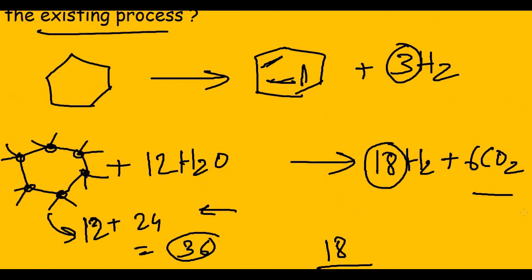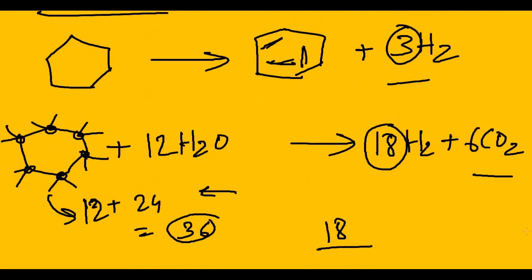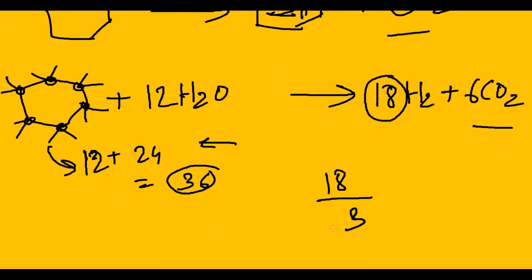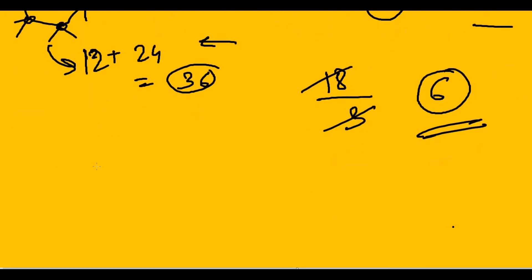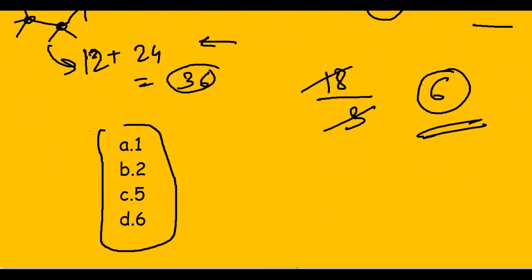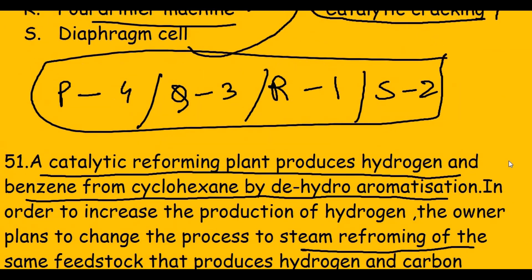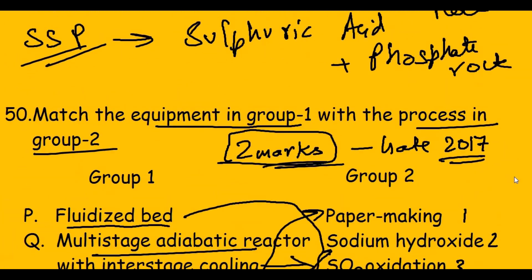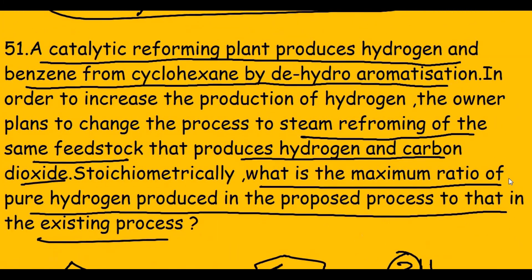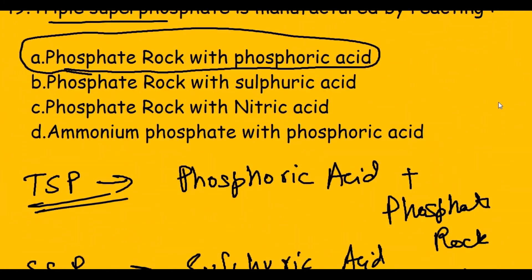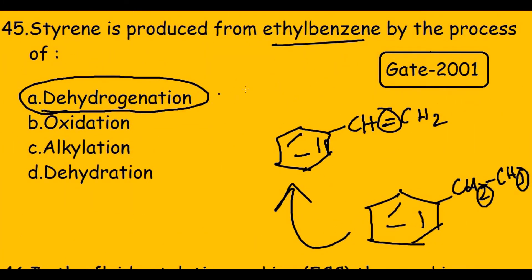The question asks for the maximum ratio of pure hydrogen produced in the proposed process to that of the existing process. That is 18 divided by 3, which equals 6. The answer is option D: 6. With this I end the video — we solved many questions and will continue in the next video. Thank you.